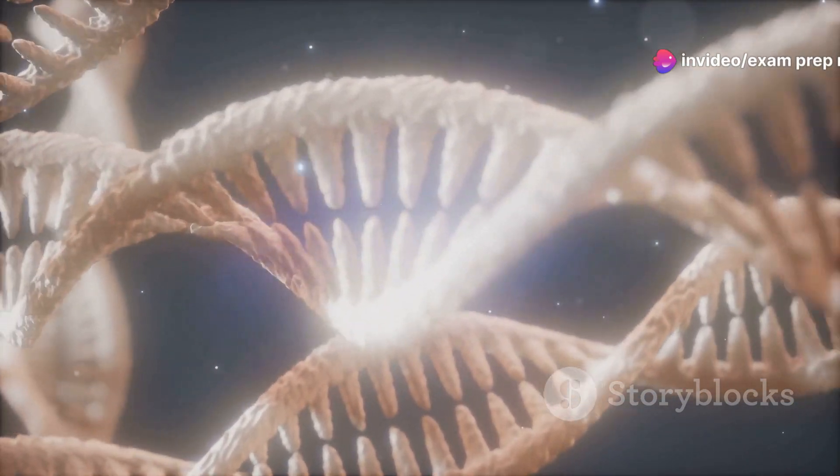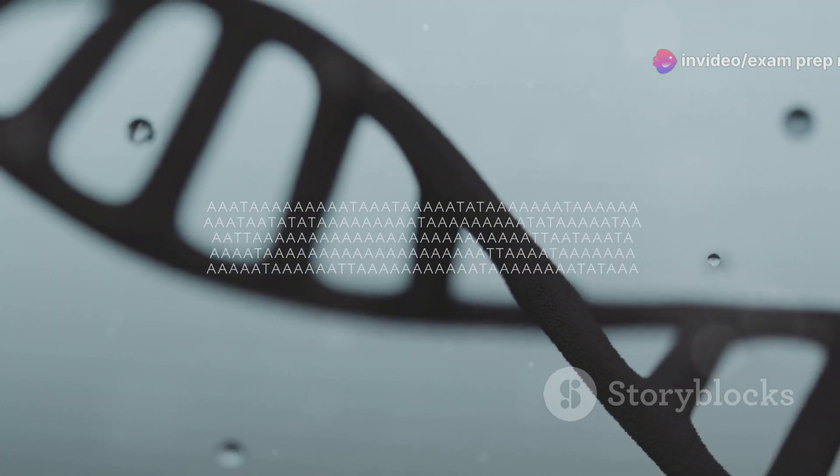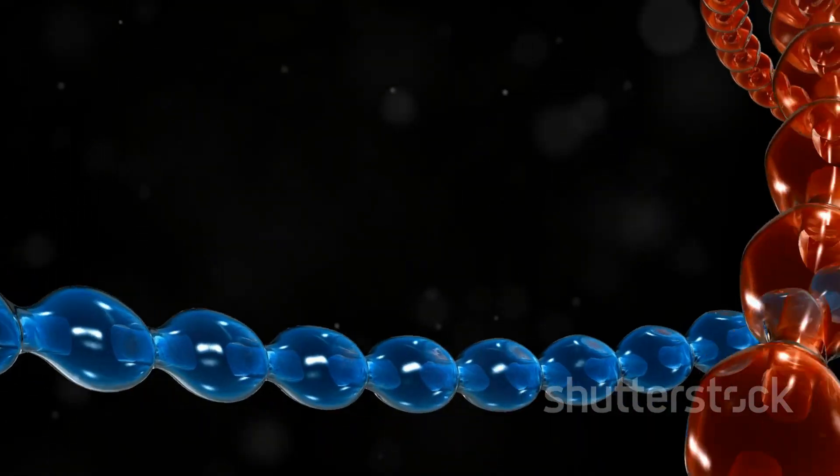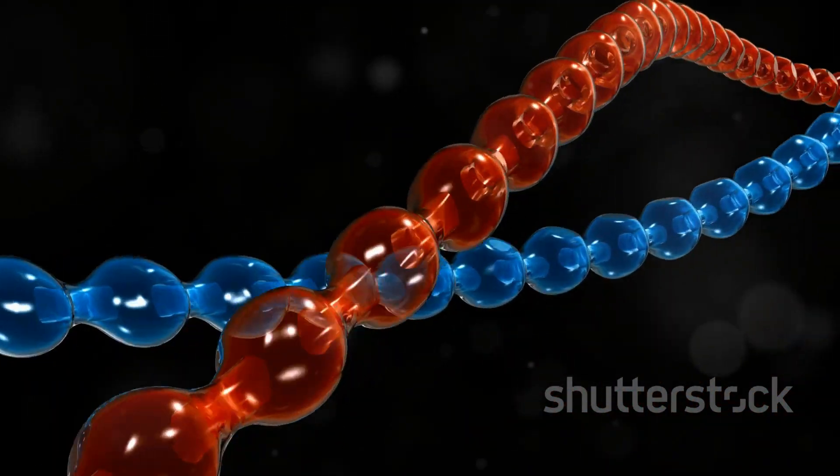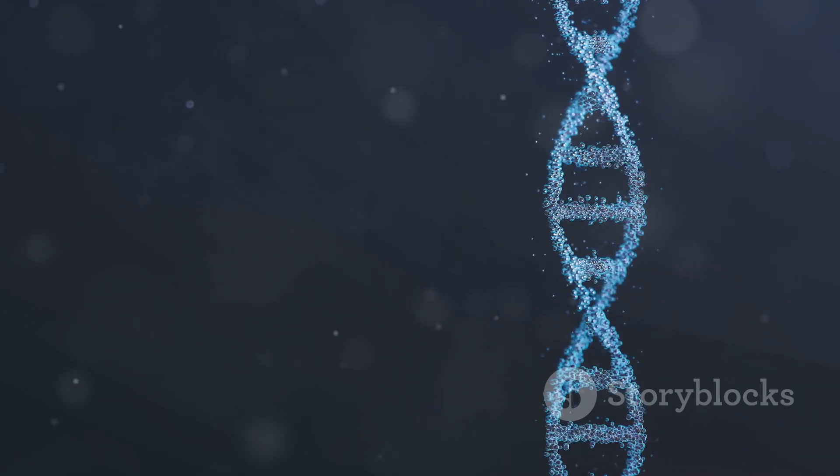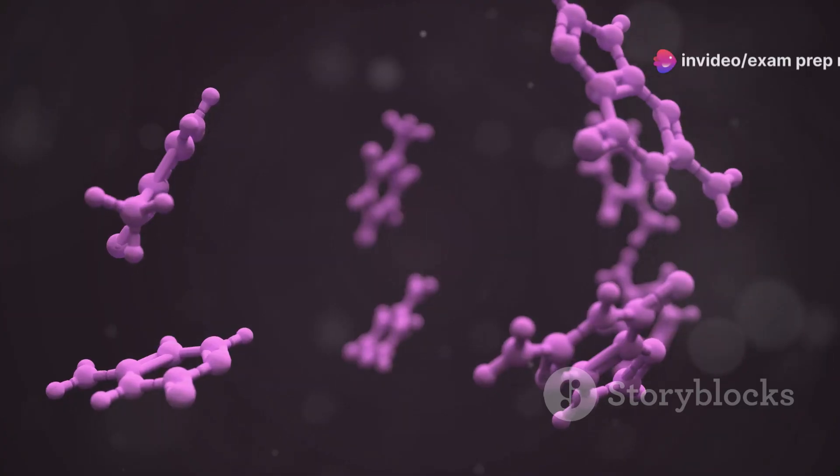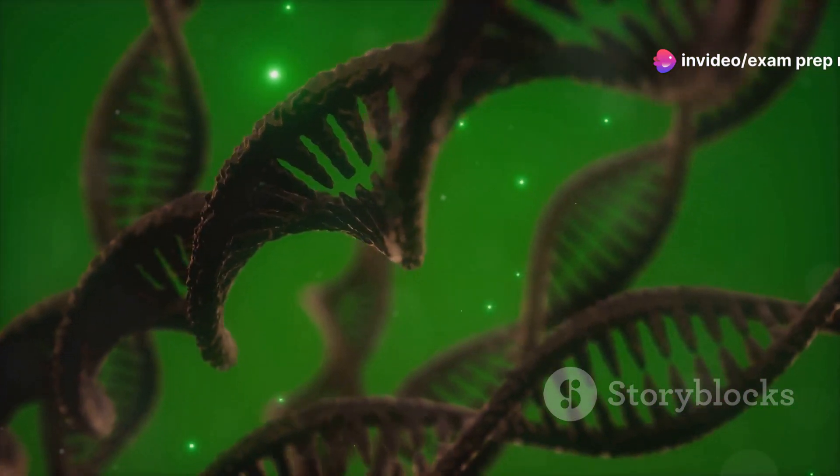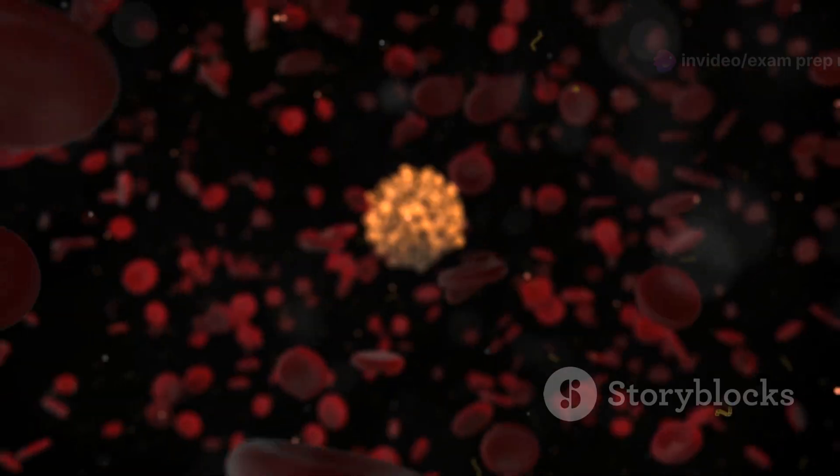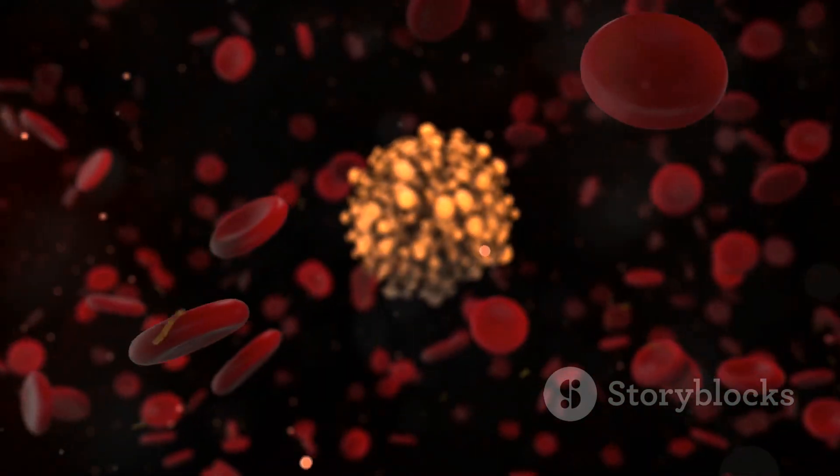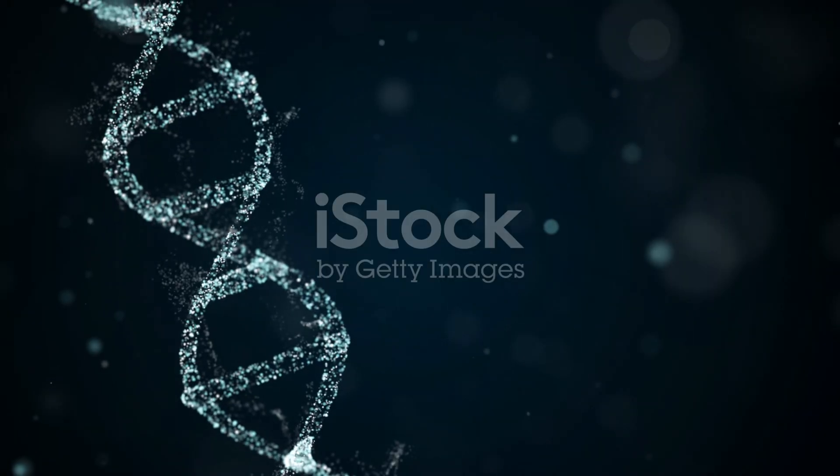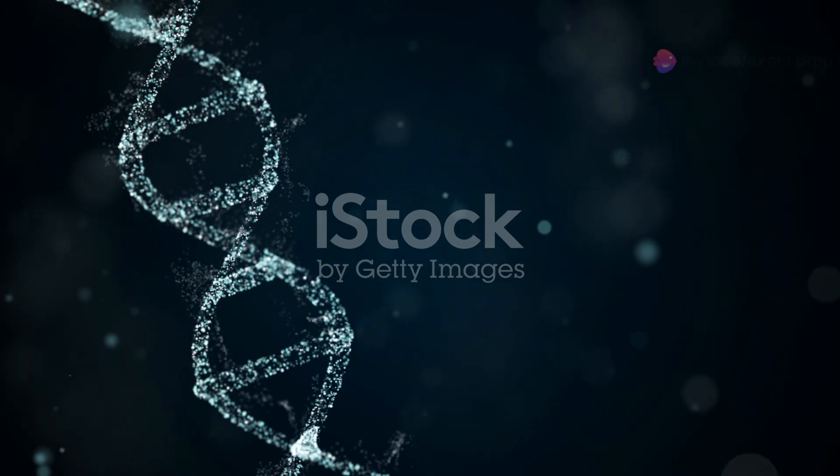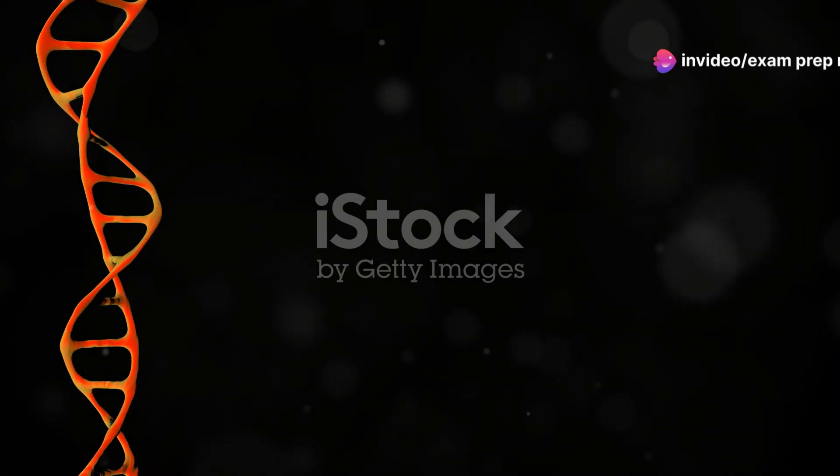DNA has a double helix structure, while RNA is single-stranded. DNA contains the sugar deoxyribose, whereas RNA contains ribose. The bases in DNA are adenine (A), thymine (T), guanine (G), and cytosine (C), while RNA has adenine (A), uracil (U), guanine (G), and cytosine (C). DNA is primarily located in the nucleus, whereas RNA can be found in both the nucleus and cytoplasm.